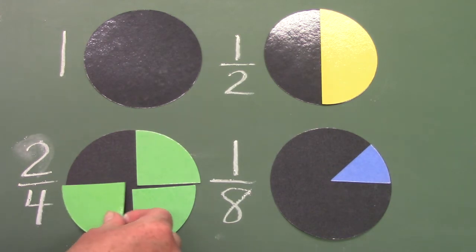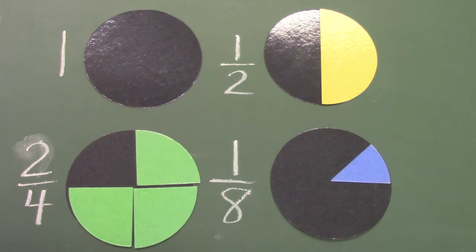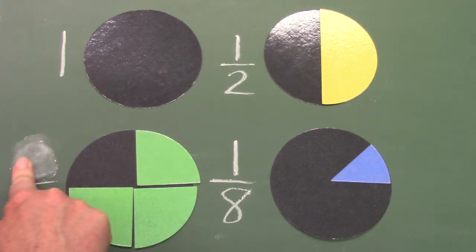What would we have if I had three pieces? That's right, three-fourths.